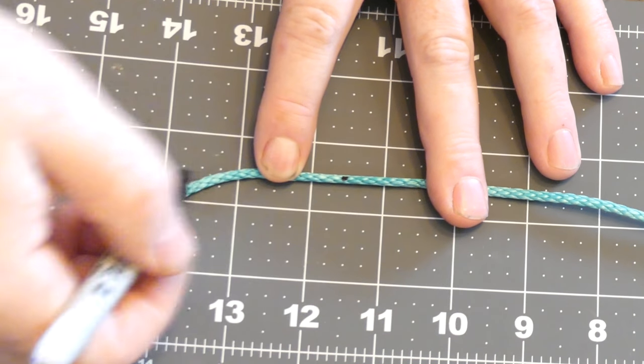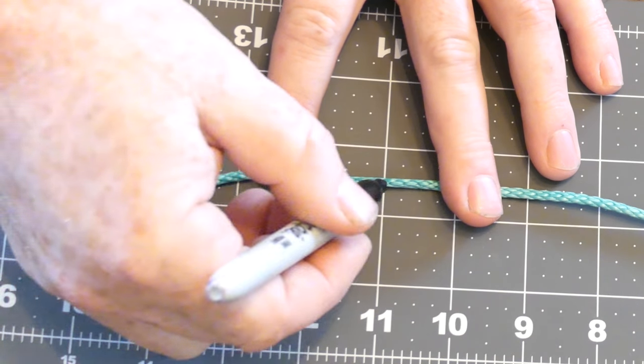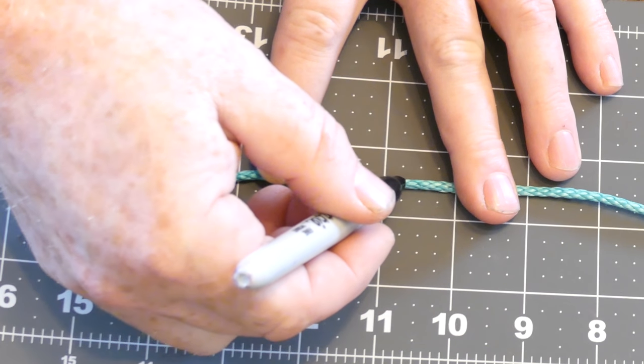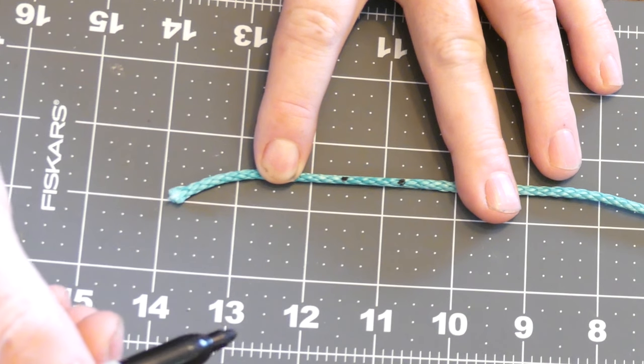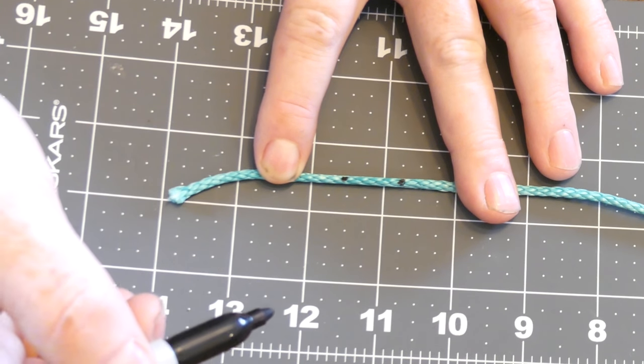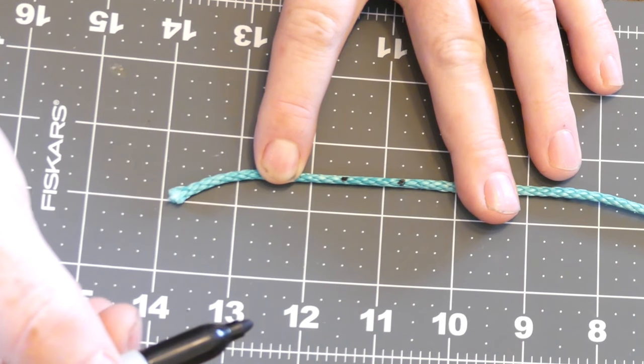Then you have a certain amount of the end that you want to thin out. So add about three quarters of an inch. And that's really about all you have to do.